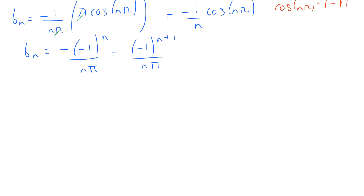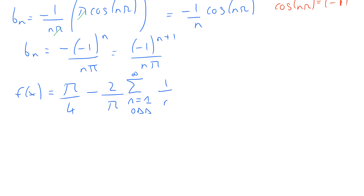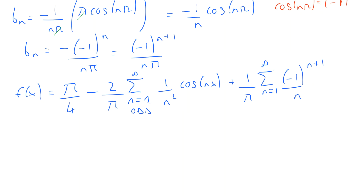Finally, we can write the complete Fourier series. f(x) equals a₀/2, and since a₀ = π/2, a₀/2 = π/4. Then minus 2/π times the sum from n=1 to infinity over odd values only of (1/n²)cos(nx). Then a separate summation for the bₙ terms with prefactor 1/π, summing from n=1 to infinity of (−1)^(n+1)/n times sin(nx). That is the final result.